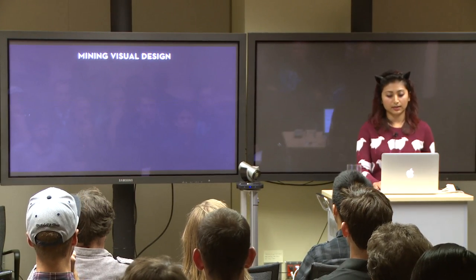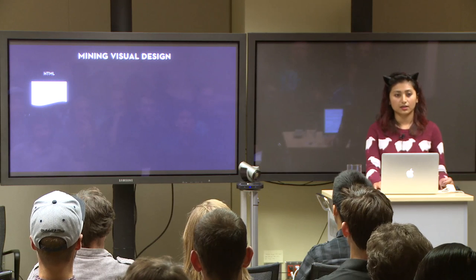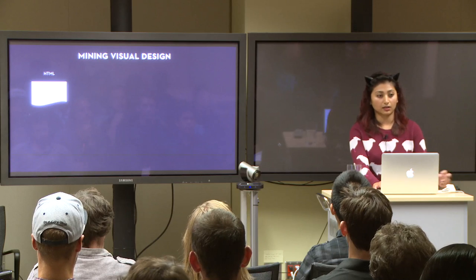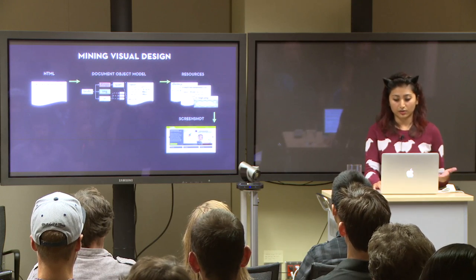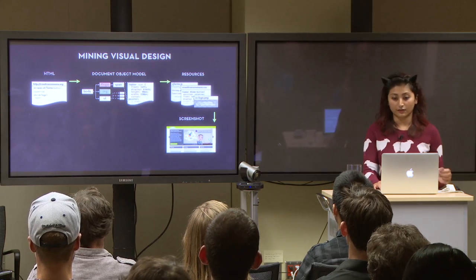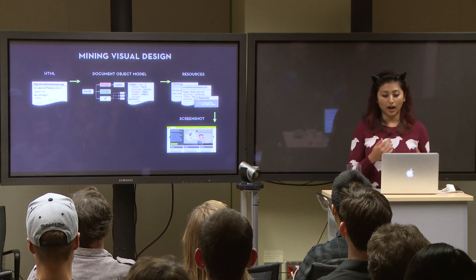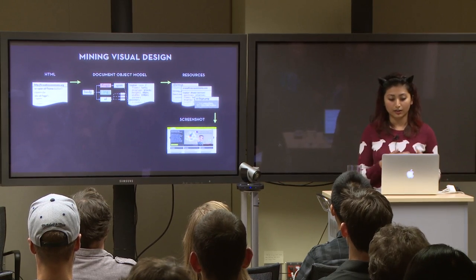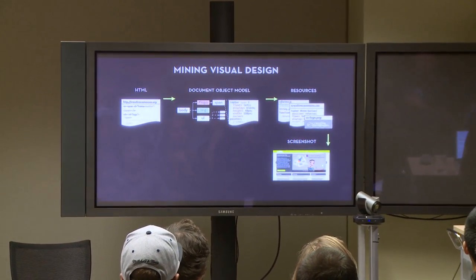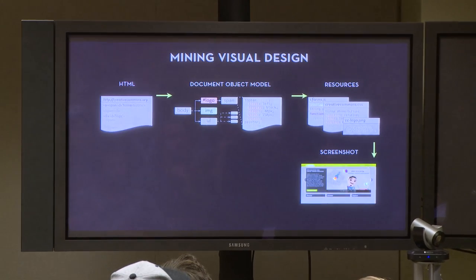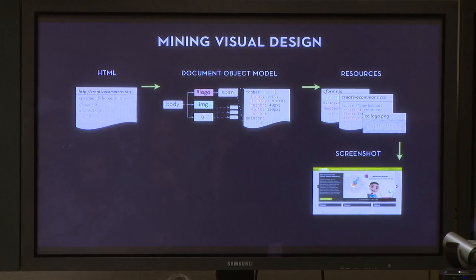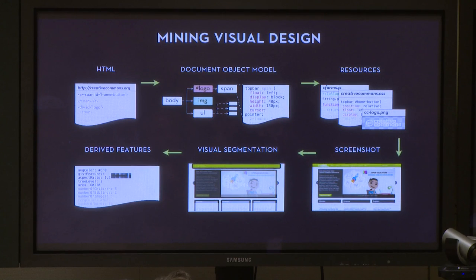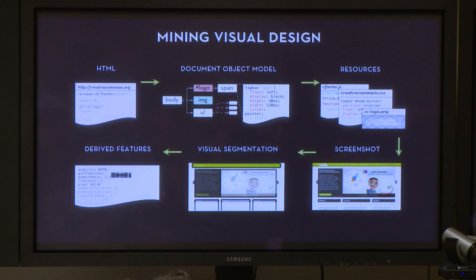Web Zeitgeist is fundamentally different than content-based web crawlers that statically analyze a page's source. To mine web design, Web Zeitgeist renders each page in a canonical view and then stores all of the resources and properties that contribute to the page's visual appearance. The important part is that you have to render the page to get at all of these visual properties. Web Zeitgeist also computes a visual segmentation of each page along with a set of descriptive design features for every element in these segmentations.